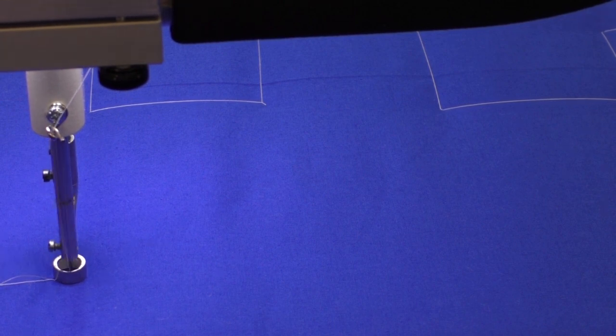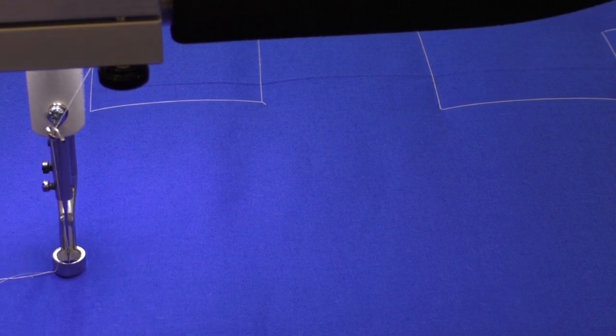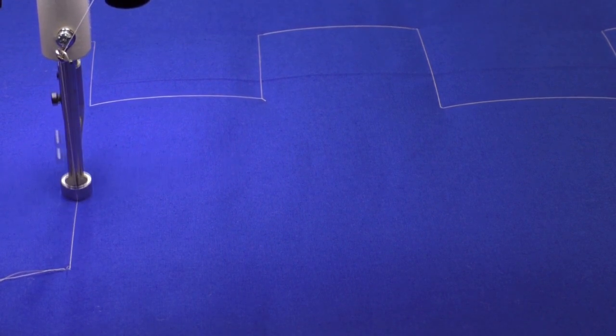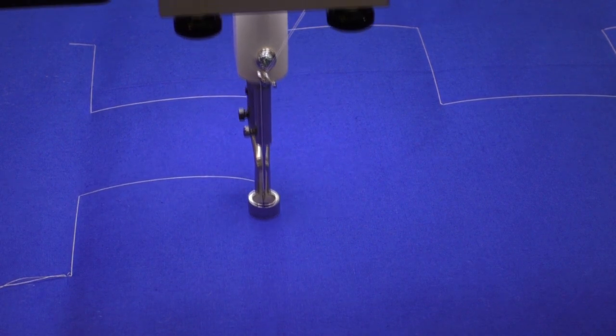Needle down, needle up to secure my first couple of stitches. I'll stop with the needle in the up position so that I can move the machine, turn it on and turn it off, turn it on, turn it off.